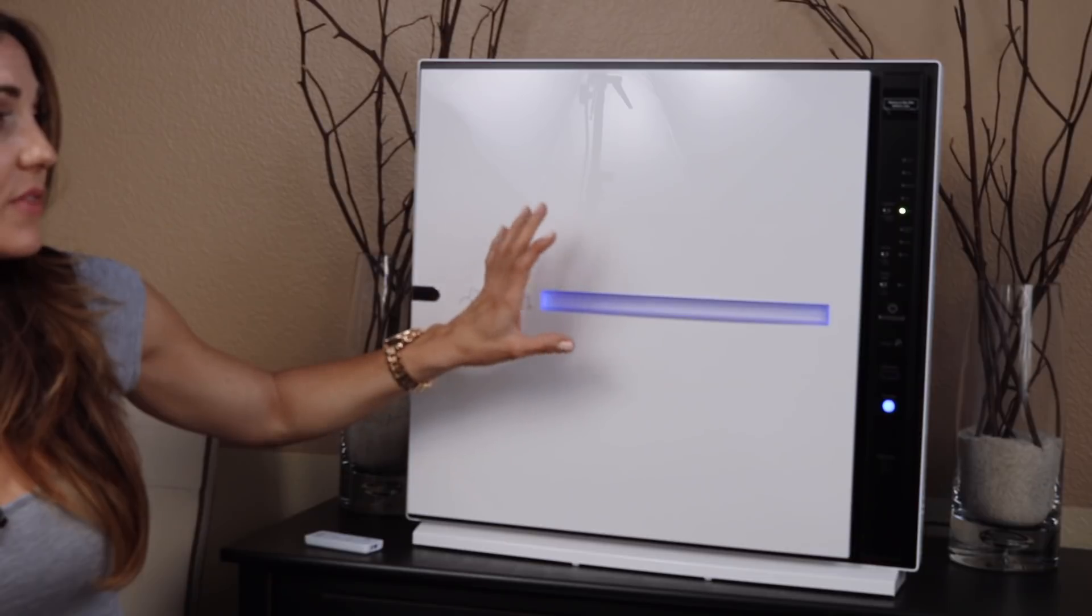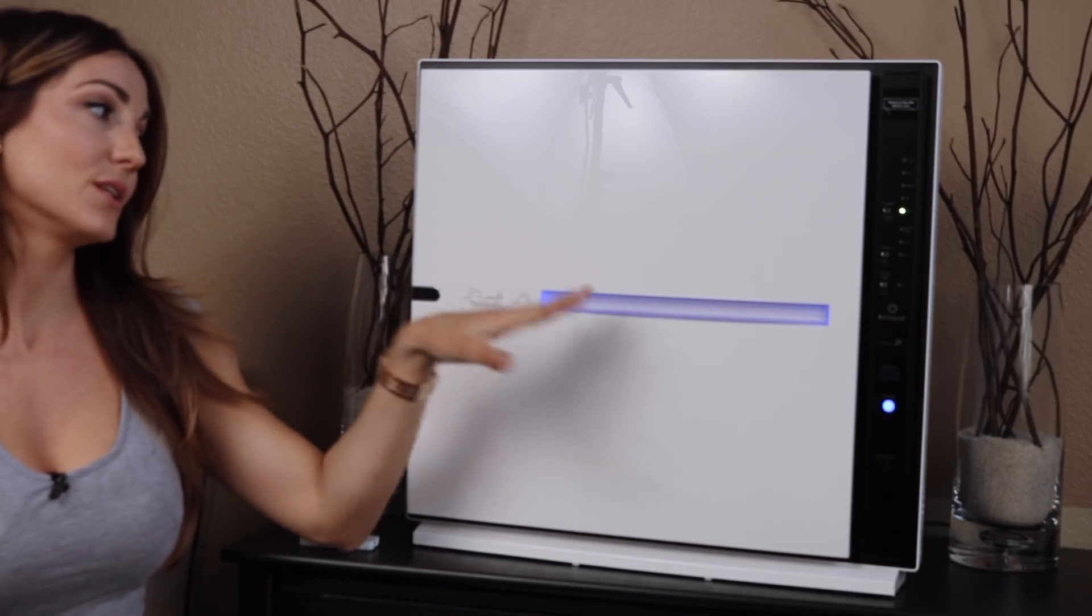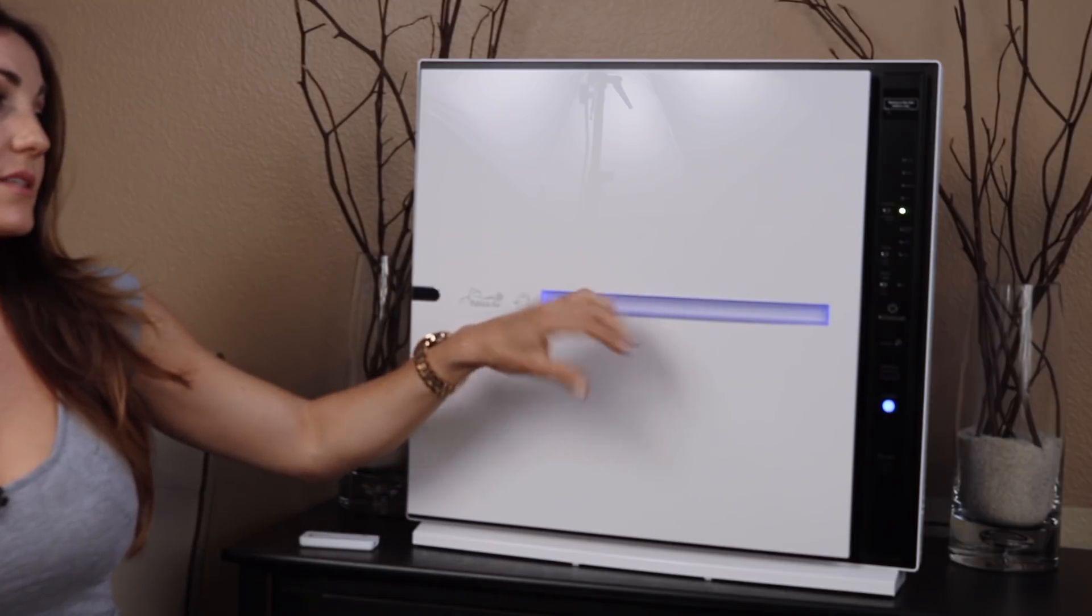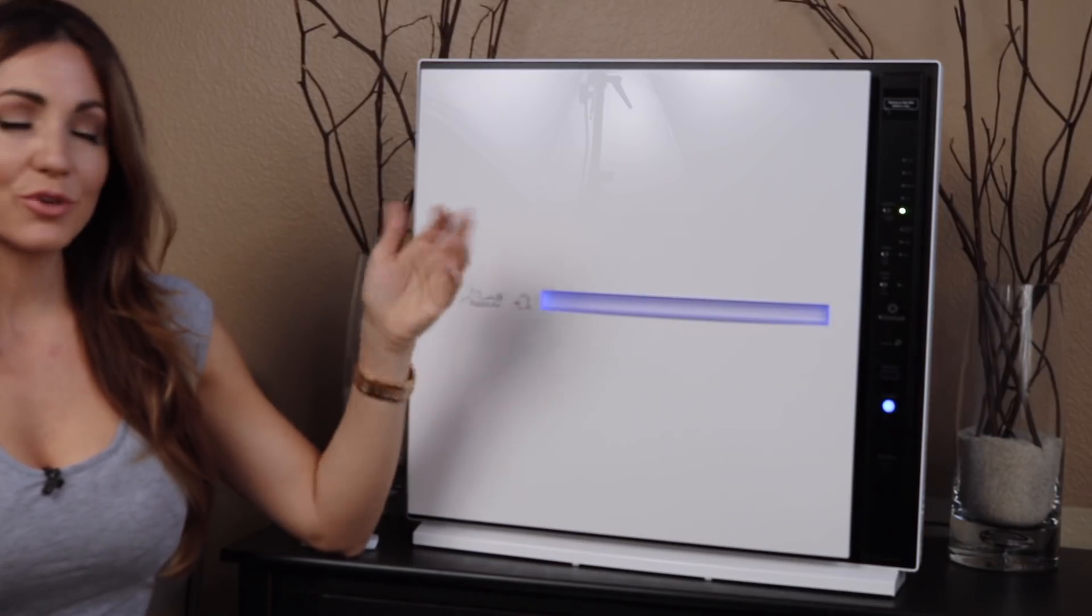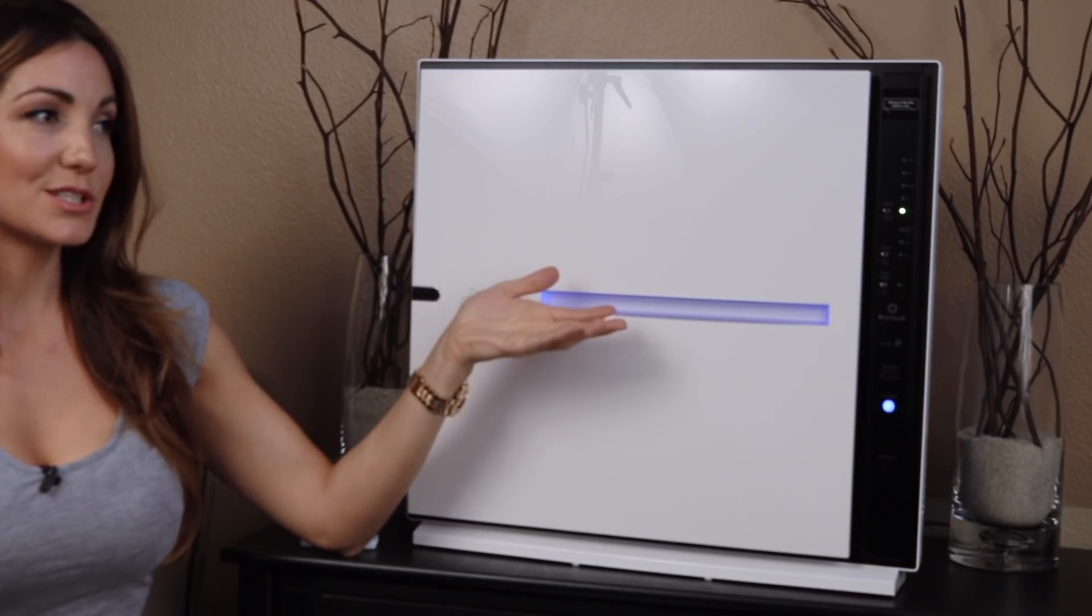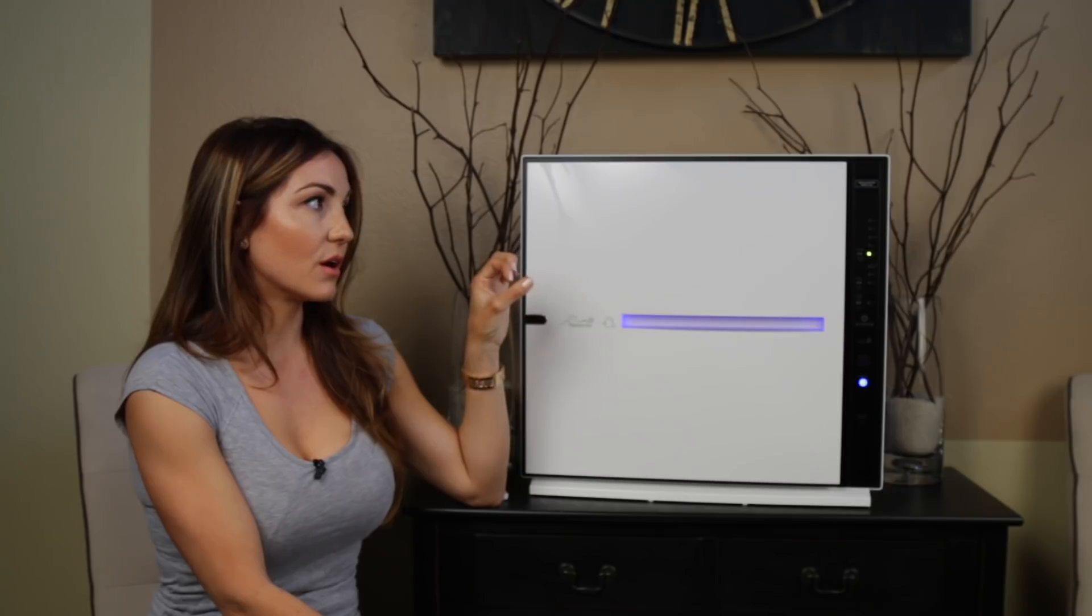This has a feature that will automatically dim, so it knows, like right now it's on and this is like the brightest that it gets. If it were dark in this room or at nighttime, for example, it knows that it's dark out, so it goes into like a sleep setting.